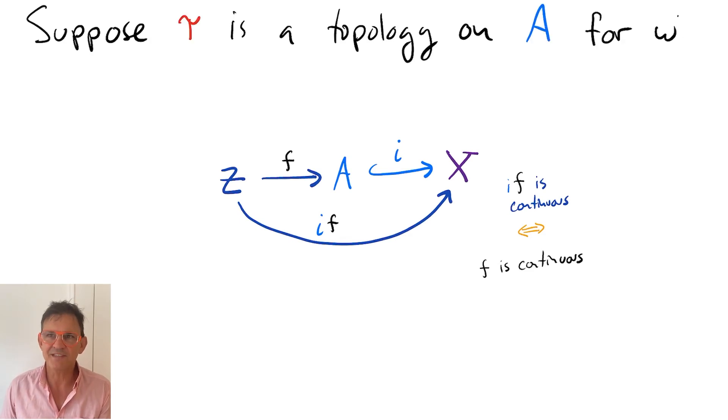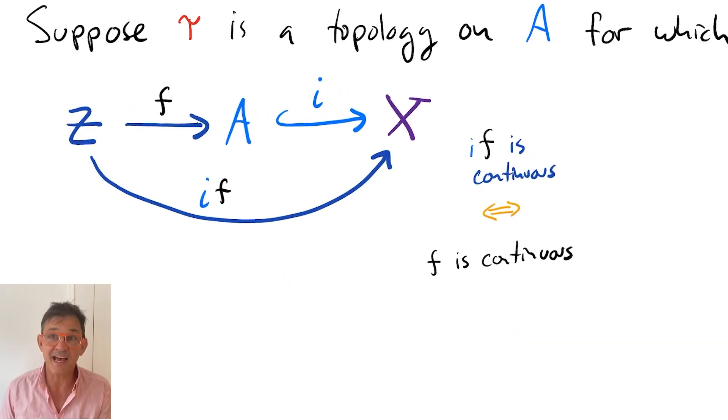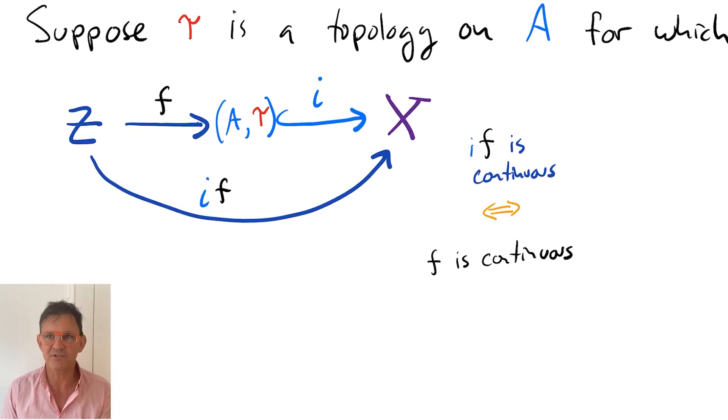That is, for all spaces Z and all maps F from Z to A, F is continuous if and only if the composition of F with the inclusion into X is continuous. We proceed in two steps.